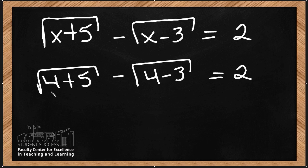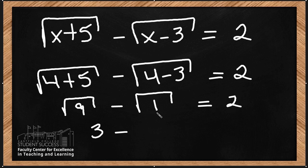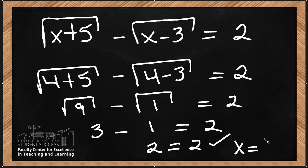The square root of 4 plus 5 - that's going to give us the square root of 9 minus the square root of 4 minus 3, which is the square root of 1. The square root of 9 is 3, the square root of 1 is 1. 3 minus 1 is 2. 2 equals 2, which is a true statement. Therefore, x equals 4 is a solution to this problem.